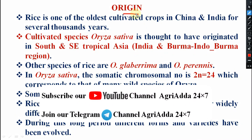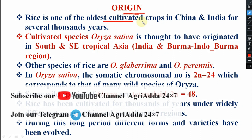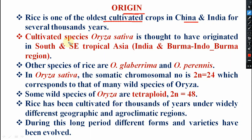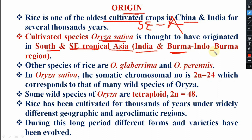First, coming to your origin - rice is one of the oldest cultivated crops in China and India. The cultivated species of rice, that is Oryza sativa, is thought to have originated from South and Southeast Asia. Sometimes in the options, India and Burma will be there, or the Indo-Burma region may be written, so any of those answers will be correct.